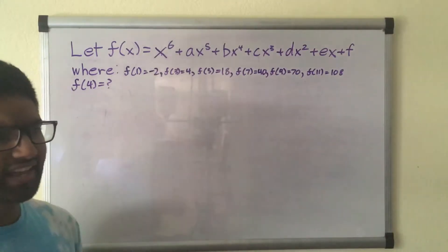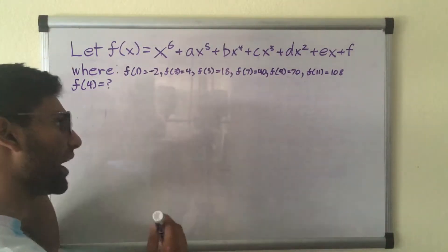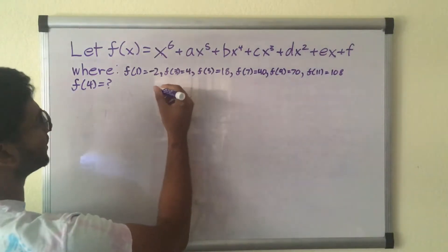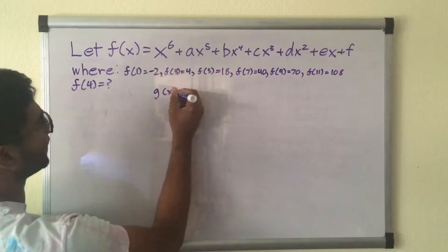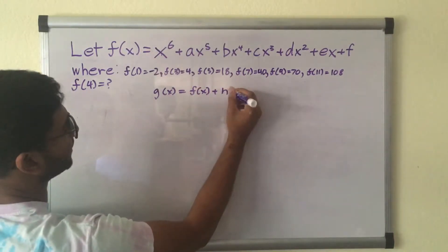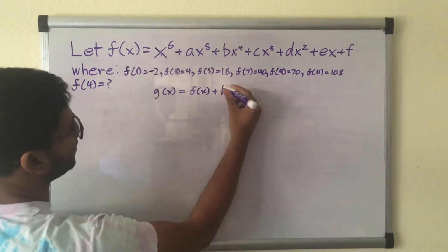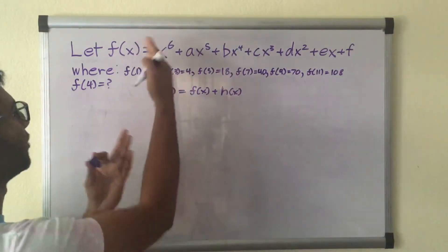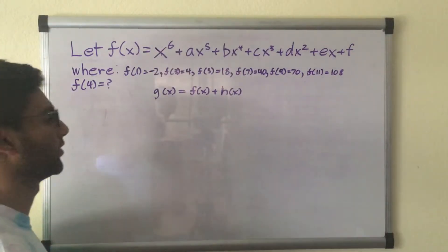But instead of that, we're going to do something that's used in abstract algebra and in problems like these. So what we're going to do is we're going to create a new function g of x, set that equal to this original f of x, plus another h of x. Now you might be asking, what help does this give us? We've just created two more functions. Instead of one function we don't know, we have three functions we don't know.